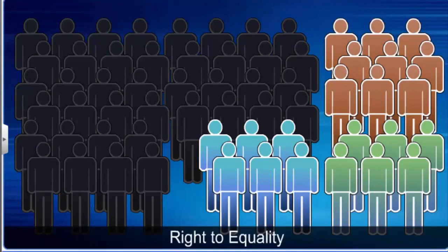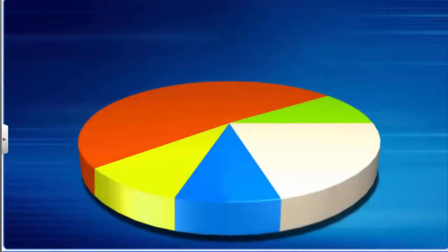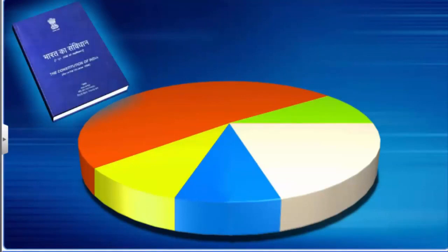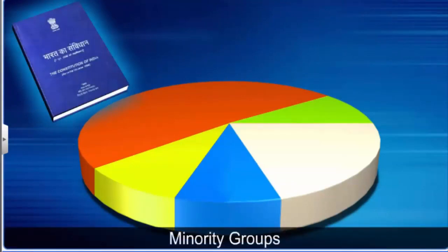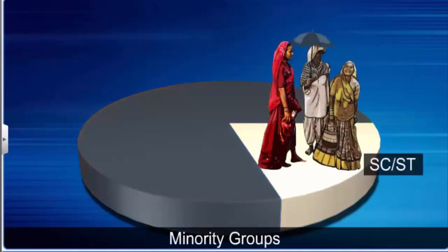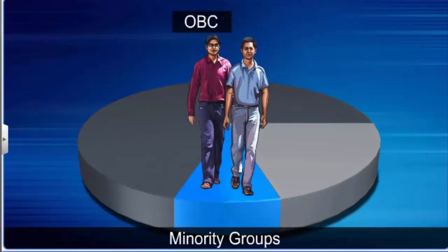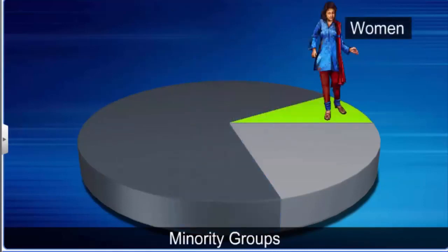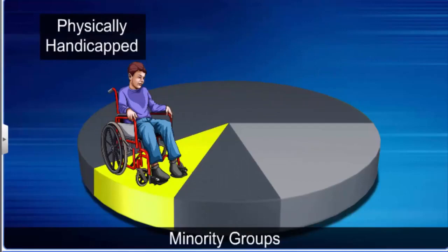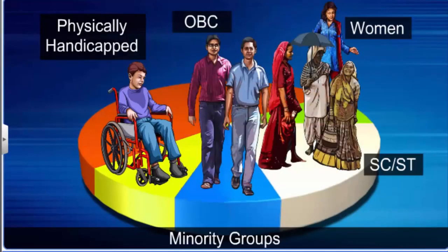Aren't reservations for minority groups against the right to equality? The Indian constitution states that reservation for minority groups such as scheduled castes, scheduled tribes, other backward classes, women, and the physically handicapped is not a violation of the right to equality. This is because reservations do not give any special privileges; they only facilitate equal opportunity.